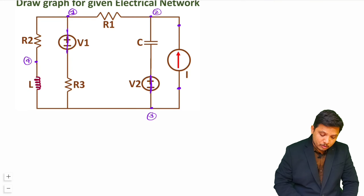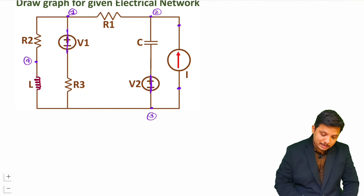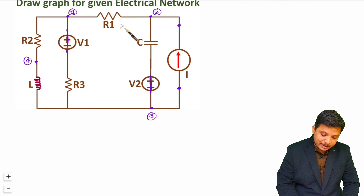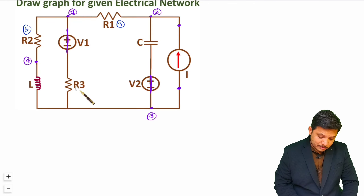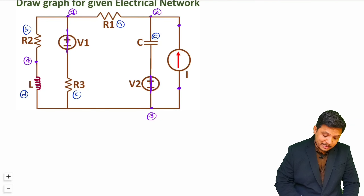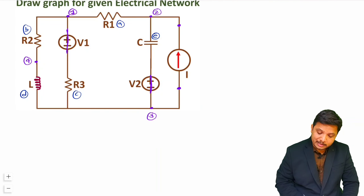Now I need to draw this circuit step by step. Before drawing, let us give naming to the branches. R1 is element A, R2 is element B, R3 is element C, L is element D, and C is element E. I need to connect all these elements between nodes as per the connections shown.